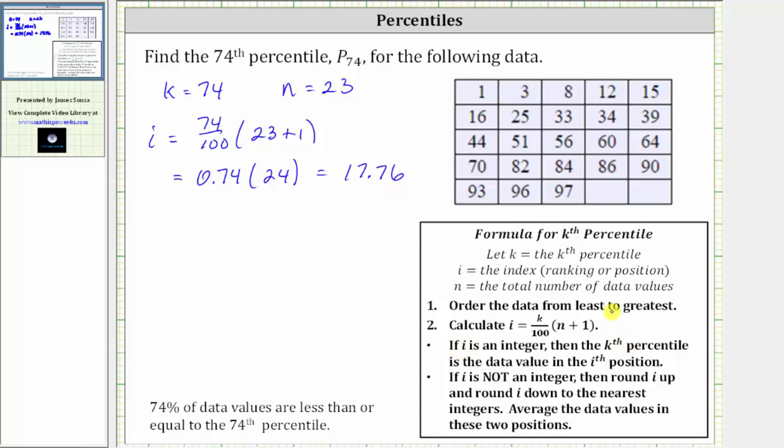Therefore this does not apply. If i is not an integer, then we round i up and round i down to the nearest integers and then average the data values in these two positions.